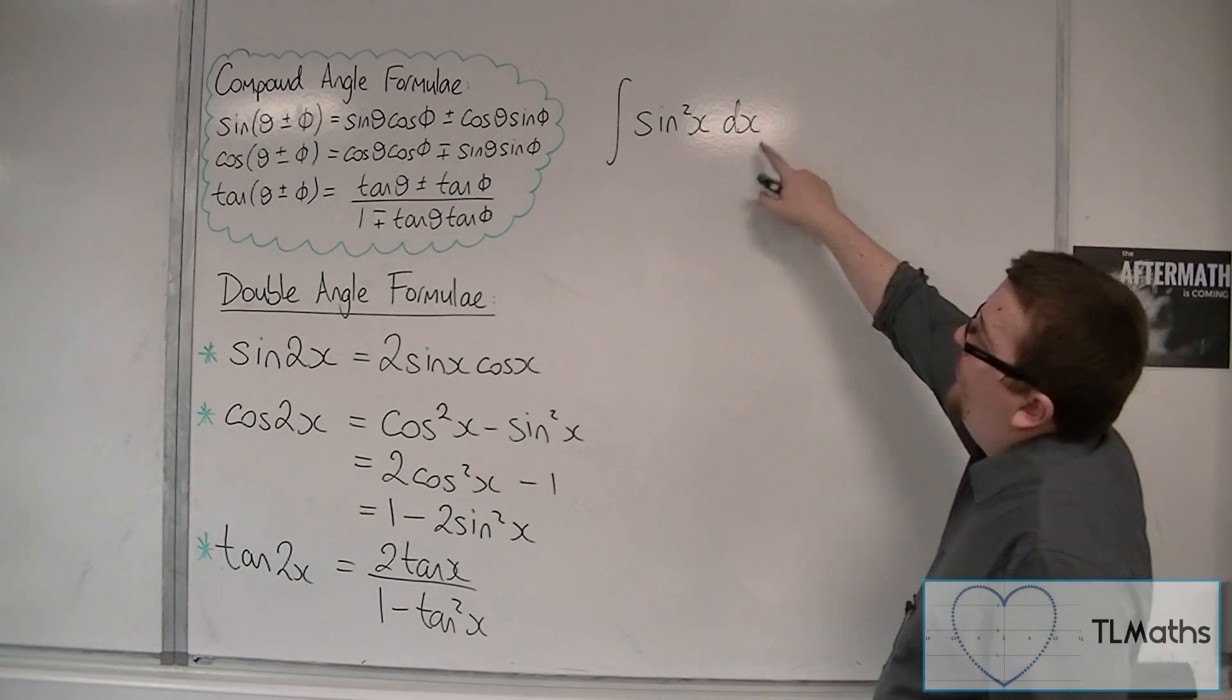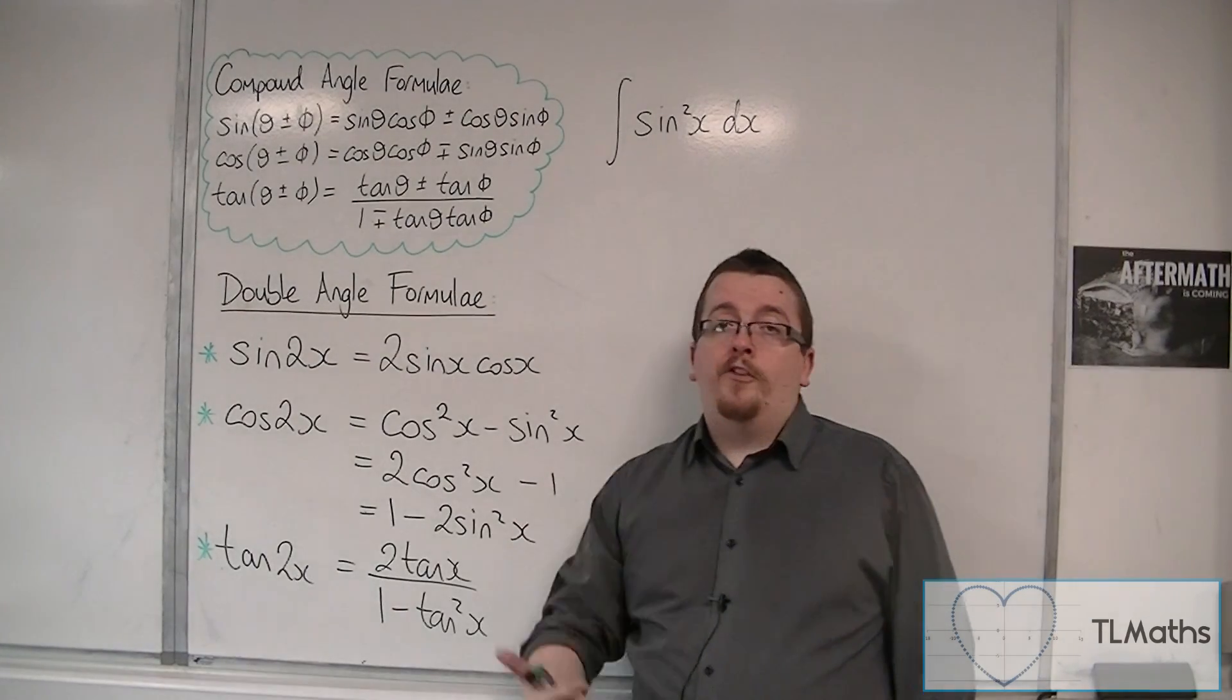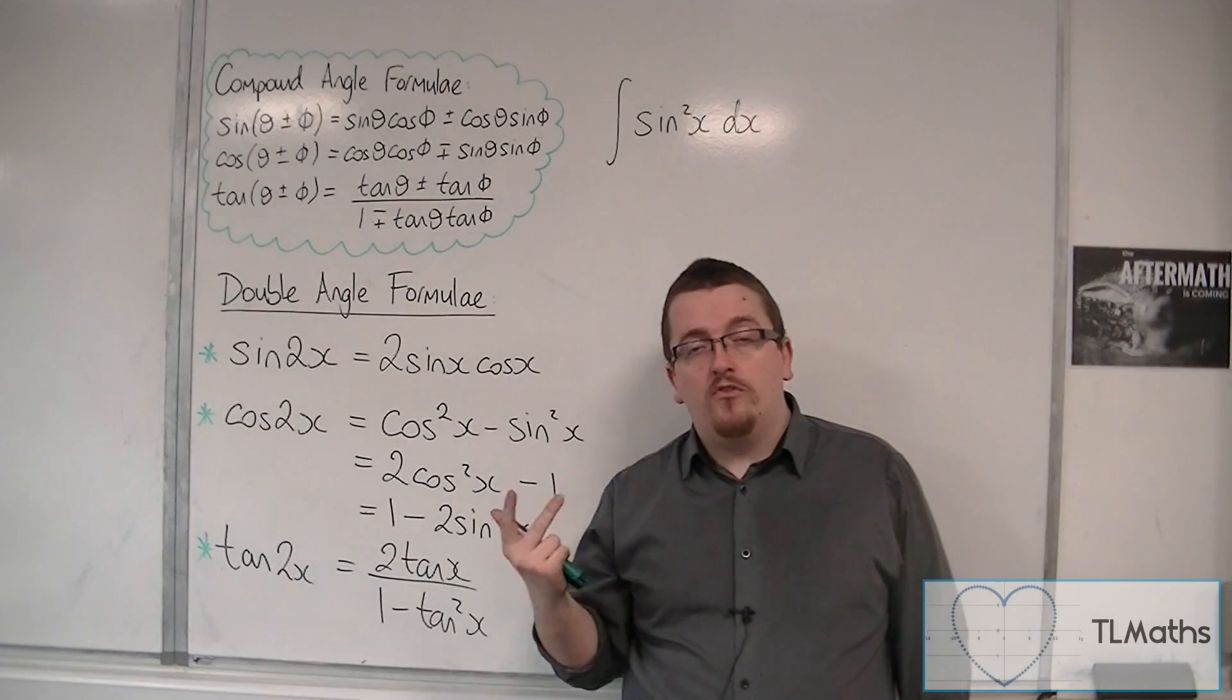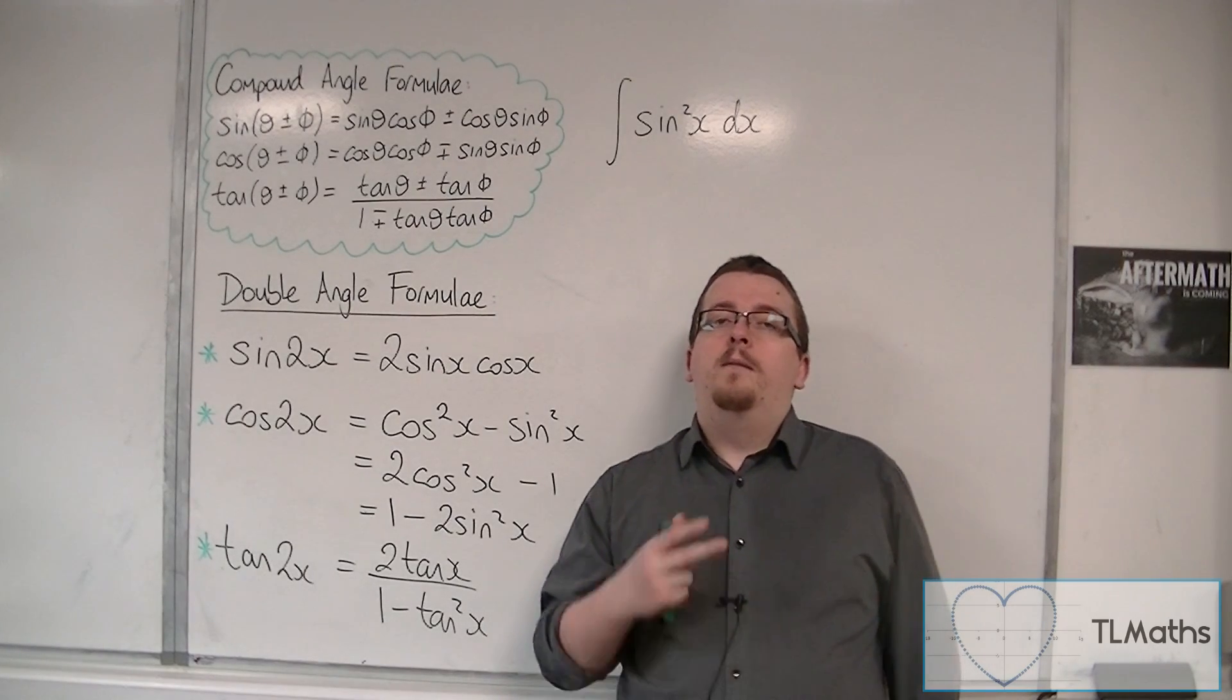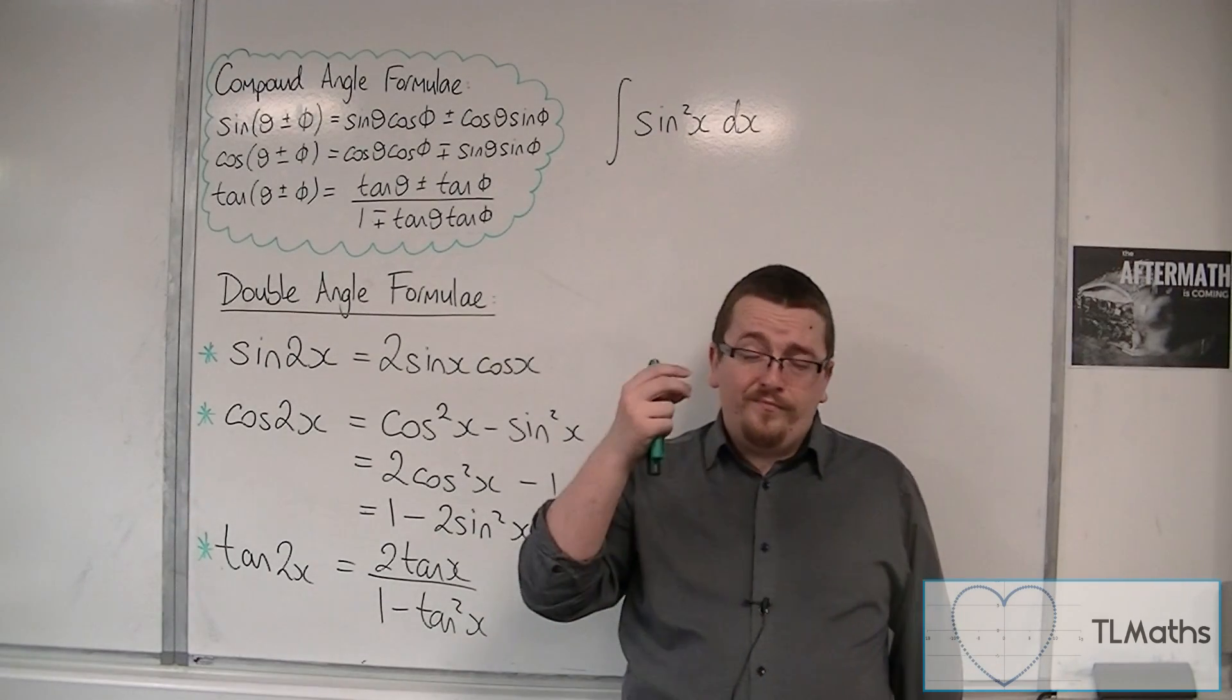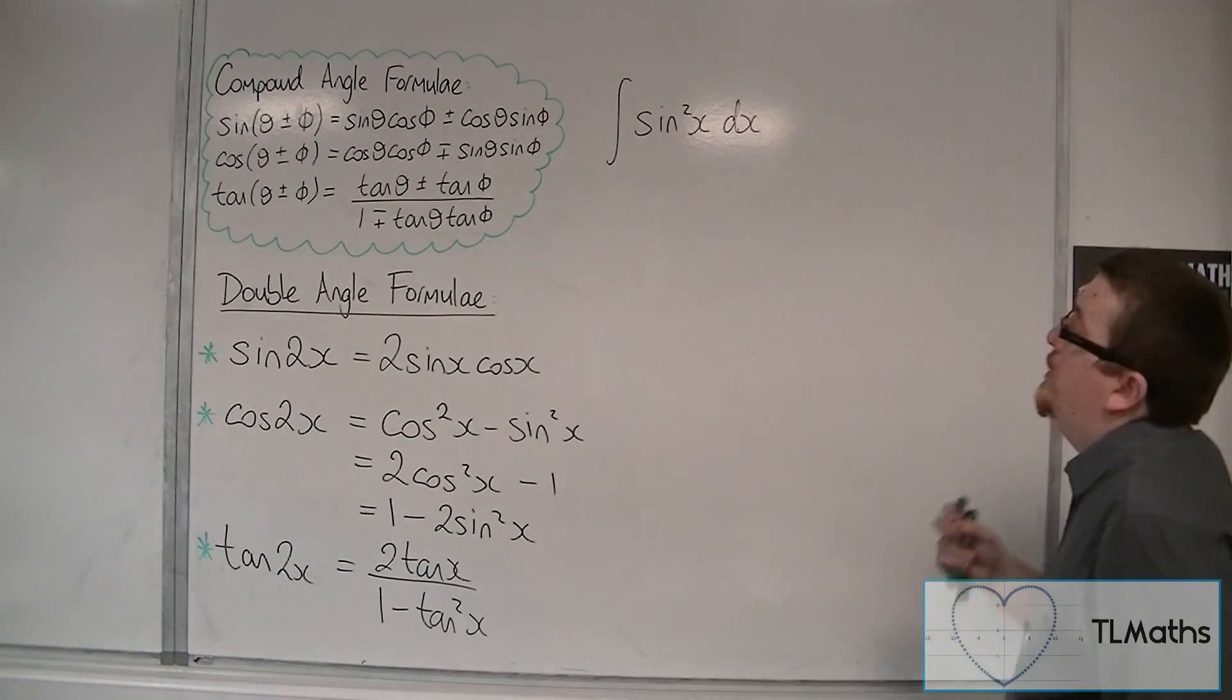So if I was wanting to integrate sine squared dx, now using the methods that we currently have, we've got either integration by substitution or integration by parts. You could use integration by parts with sine x times sine x, but what's going to happen is you're going to go around in circles. And it's a lot easier to use a double angle formula. And this is really the way to do it.